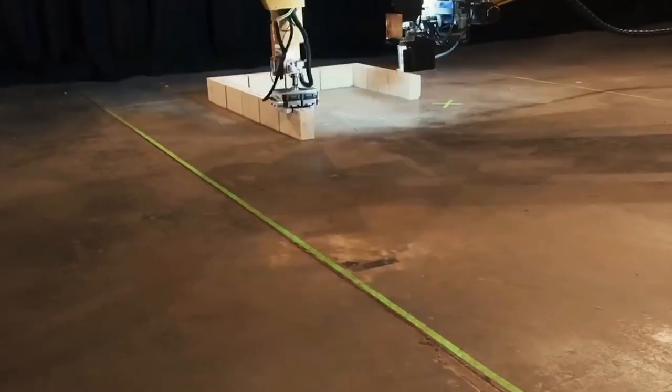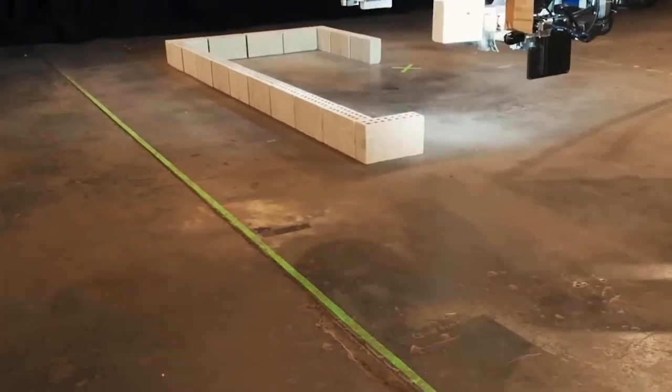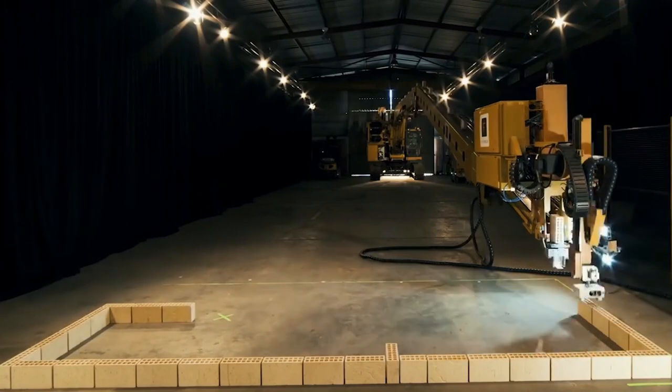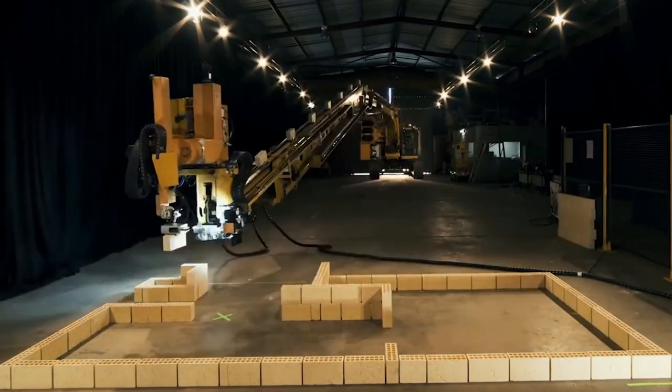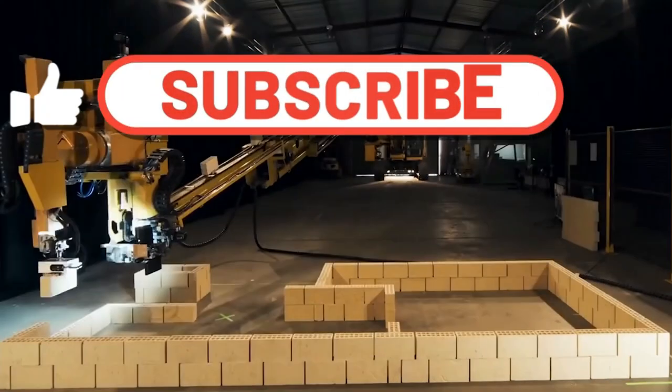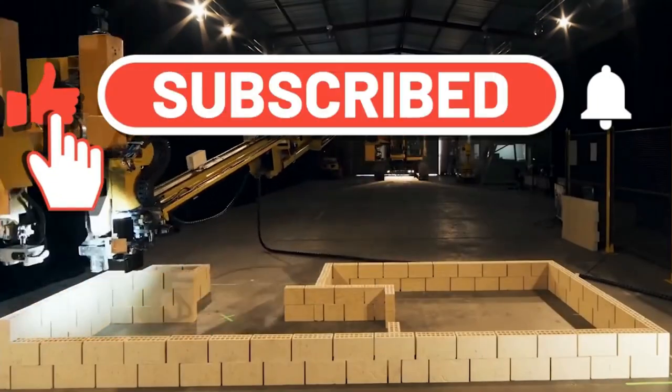The robot follows the given 3D model and independently lays out the design of brick houses. To do this, he uses a 3D system automated design. The device arranges bricks with an accuracy of half a millimeter.